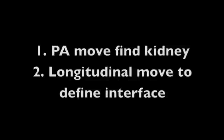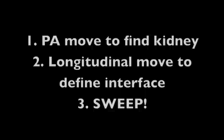To review: first you'll make a PA move to make the kidney look as big as possible. Next, you'll make a longitudinal move to see the entire interface. Then you'll very slowly sweep the entire interface. You might have to do several overlapping sweeps at different positions in the longitudinal plane if you can't see the entire interface in one view because of the rib shadows.